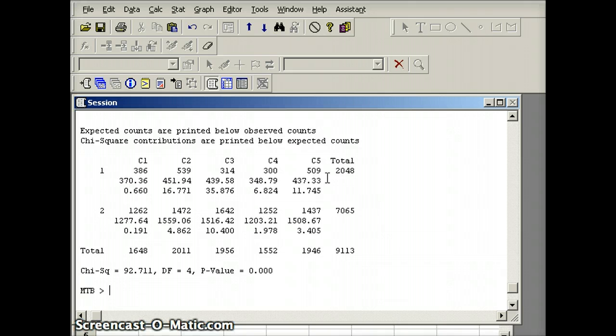You can see that the observed numbers and the expected numbers are very different. That leads us to a very large chi-square of 92.711, which agrees with what we had before. Our degrees of freedom are 4, and our p-value is 0. Strong evidence that the proportions of orange pieces in each of those five boxes are significantly different.